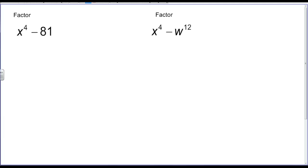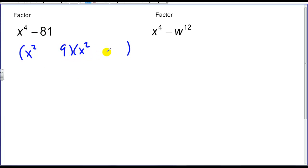In our next term, we also have perfect squares. However, these are a little bit tougher to see, and we'll notice that when we think we're done, we're not quite done. The square root of x to the fourth — what multiplied by itself is x to the fourth — that's x squared times x squared. And what multiplied by itself is 81? That's 9. I need a positive and a negative. We have perfect squares remaining because x squared is a perfect square and 9 is a perfect square.